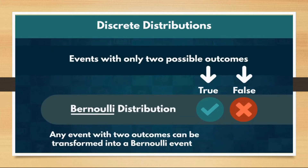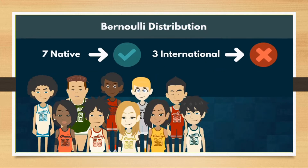The second one is Bernoulli distribution. Here only two outcomes are possible — either true or false, yes or no, or success or failure. The difference from the previous distribution is that the probability of both outcomes may not be the same. For example, we pick a class monitor from a class having 7 native students and 3 international students. We assign class monitor being native as true and monitor being international as false. Now the outcome can only be true or false — we have a Bernoulli distribution.